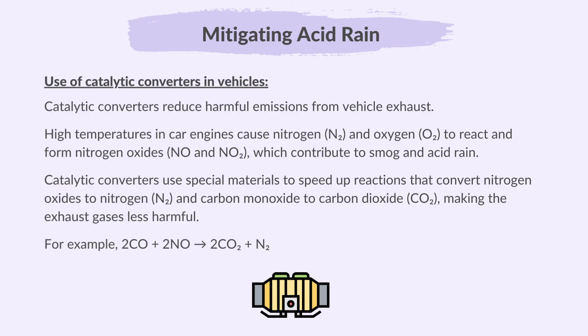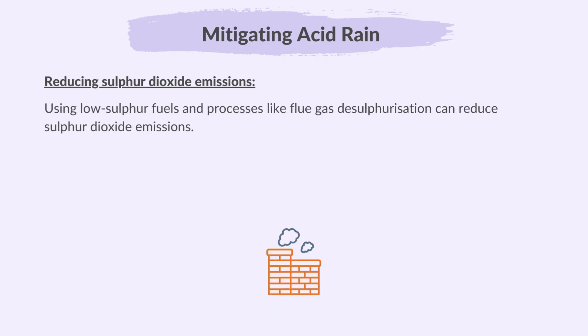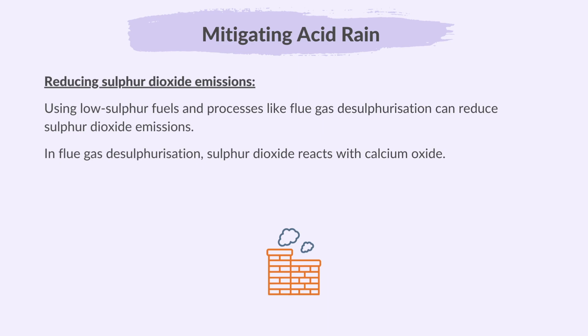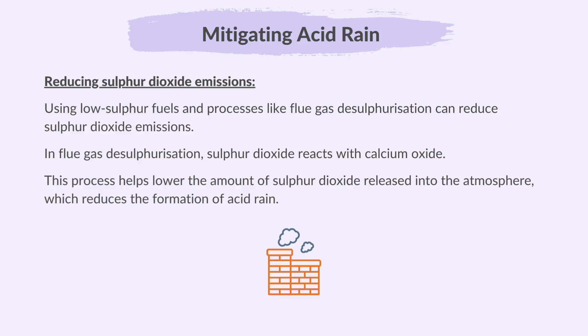Here's an example of reducing sulfur dioxide emissions. Using low sulfur fuels and processes like flue gas desulfurization can reduce sulfur dioxide emissions. In flue gas desulfurization, sulfur dioxide reacts with calcium oxide. This process helps lower the amount of sulfur dioxide released into the atmosphere, which reduces the formation of acid rain.